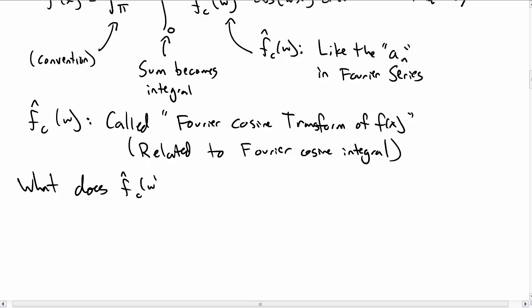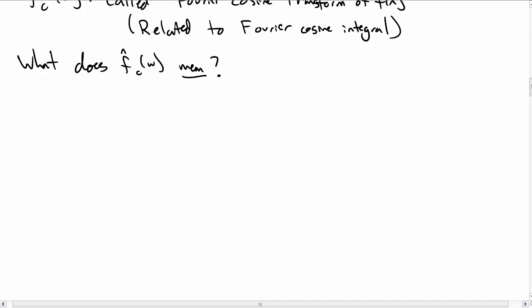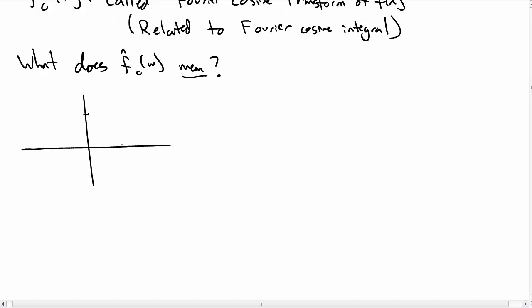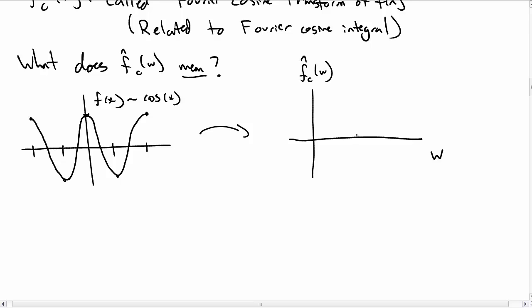Let's talk about what this Fourier cosine transform even means. Let's look at a particular function f(x) that we've seen before, cosine of x. So f(x) being cosine of x, what should the Fourier transform of this be? The Fourier transform will just be a spike at ω equal to positive 1.